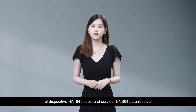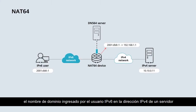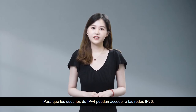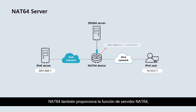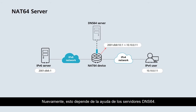Before address translation, the NAT64 device needs the DNS64 server to resolve the domain name entered by the IPv6 user into a server's IPv4 address and to send the address information to the IPv6 user. So that IPv4 users can access IPv6 networks, NAT64 also provides a server function which translates IPv4 addresses back into IPv6 addresses. Again, this relies on the help of DNS64 servers.